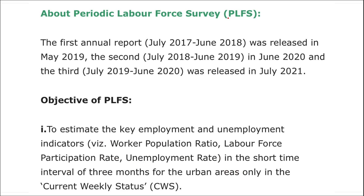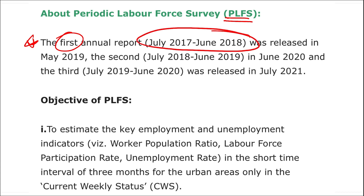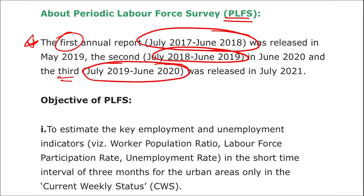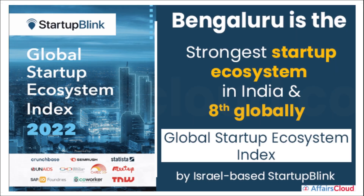The first edition of the Periodic Labour Force Survey covered July 2017 to June 2018; the second covered July 2018 to June 2019; the third covered July 2019 to June 2020; and the fourth — now released — covers July 2020 to June 2021.